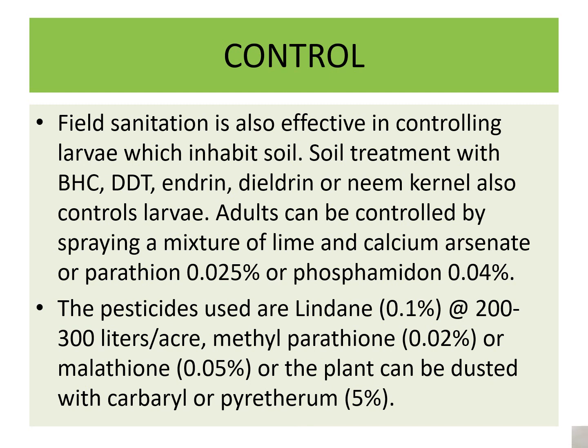Control measures: field sanitation is effective in controlling larvae that inhabit the soil. Soil treatment with BHC, DDT, aldrin, dieldrin, or neem kernel also controls larvae. Adults can be controlled by spraying a mixture of lime and calcium arsenate, or parathion 0.025%, or phosphorus. Pesticides used include lindane 0.1% at 200 to 300 liters per acre, methyl parathion 0.02%, or malathion 0.05%. Plants can also be dusted with carbaryl or pyrethrum.